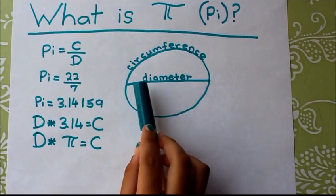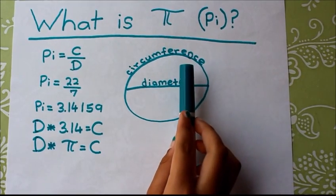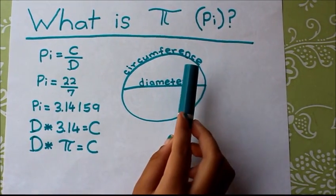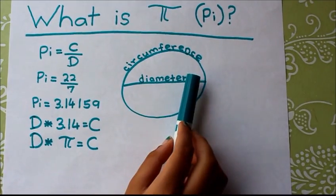For example, if the diameter is 1, then the circumference would be 3.14 because the diameter times 3.14 equals the circumference.